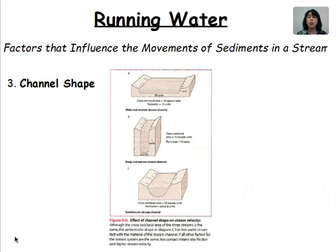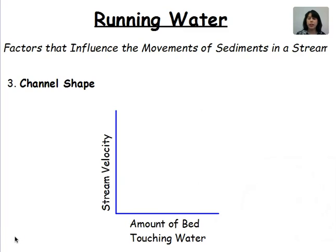Another factor is the shape of the channel the stream is flowing through. Looking at three different examples from our notes: channel A and B look drastically different but actually have the same perimeter of 12 units — A is very wide and B is very narrow. Channel C has a smaller perimeter of about 8 units. The amount of bed-touching water — how much of the stream channel walls are touching the water — has an inverse relationship with velocity. The more water touches the stream banks, the slower the stream velocity will be, due to the amount of friction caused.